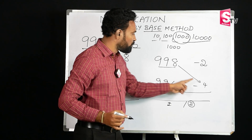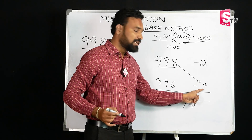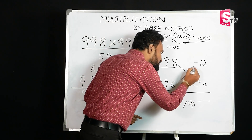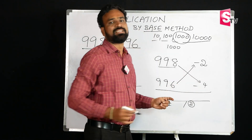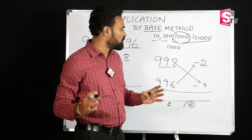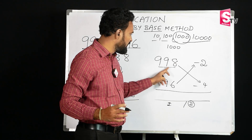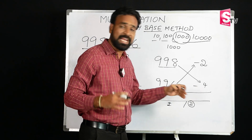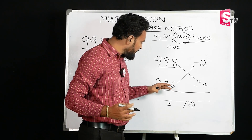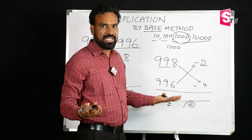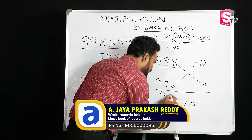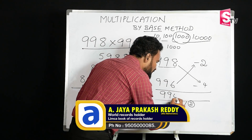998 is 2 below 1000, so its deficiency is 2. 996 is 4 below 1000, so its deficiency is 4. Cross subtraction: 998 minus 4 is 994, and 996 minus 2 is also 994. Both give the same result of 994. That is the first part of the answer.